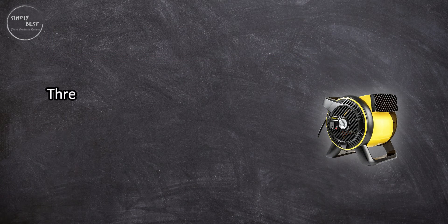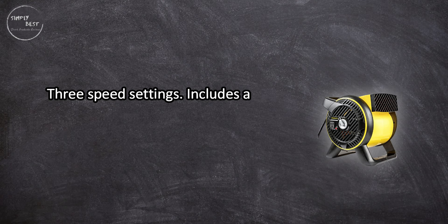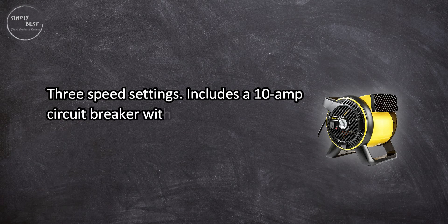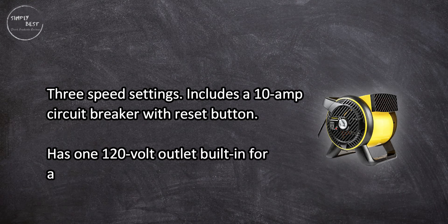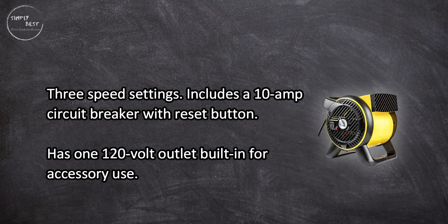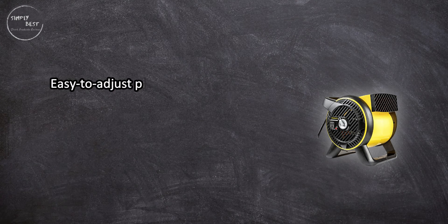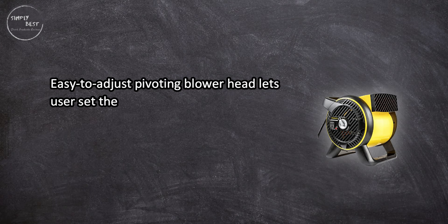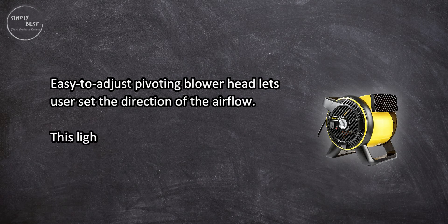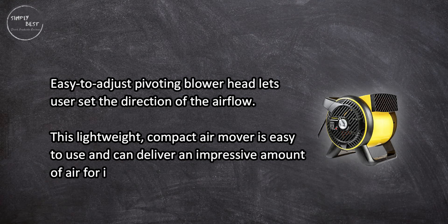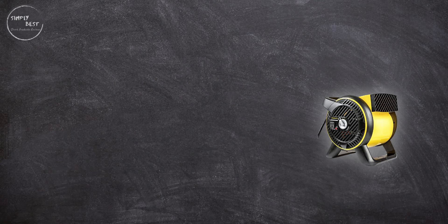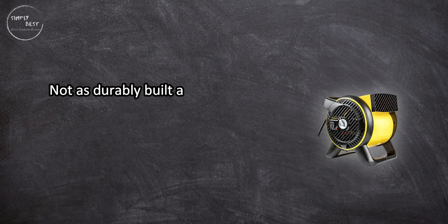Three speed settings, includes a 10 amp circuit breaker with reset button, has one 120 volt outlet built-in for accessory use. Easy to adjust pivoting blower head lets user set the direction of the airflow. This lightweight compact air mover is easy to use and can deliver an impressive amount of air for its size. Not as durably built as some may expect from a Stanley product.